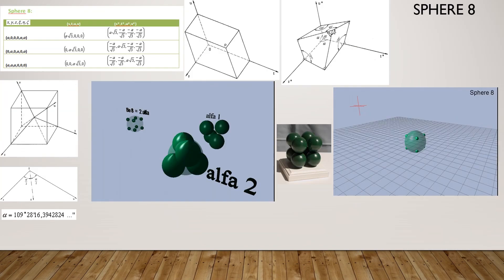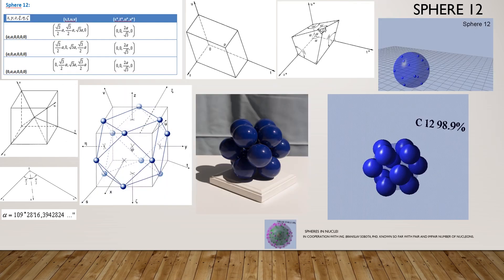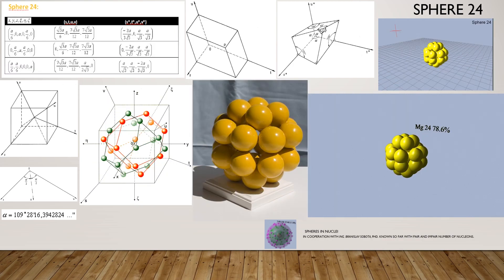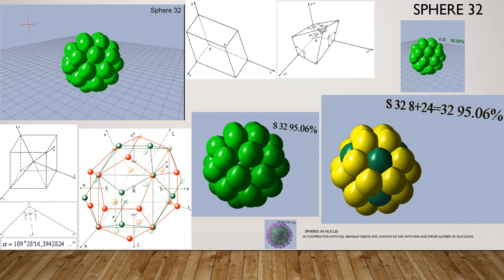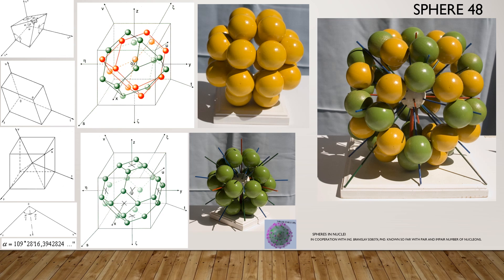Mutually inserted two alpha particles. Mutually inserted three alpha particles. Mutually inserted six alpha particles. Inserted eight alpha particles: 32 equals 8 plus 24. Six nucleons around each SDUV axis.